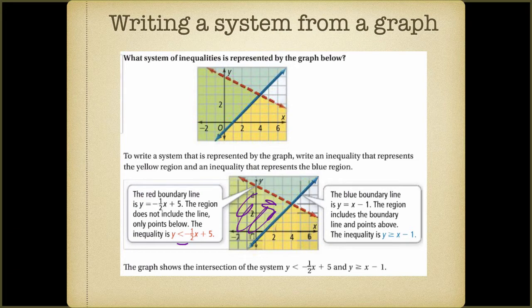To write a system of inequalities given a graph, we write the equation of each line but replace the equal sign with an inequality symbol, depending on whether the shaded region is below or above the line we are writing the inequality for.